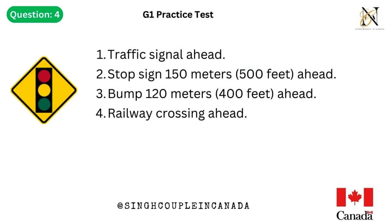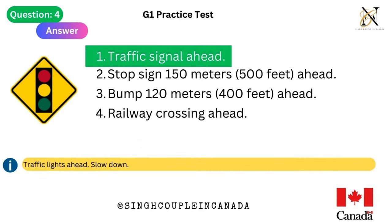Question 4. This traffic sign means: 1. Traffic signal ahead. 2. Stop sign 150 meters (500 feet) ahead. 3. Bump 120 meters (400 feet) ahead. 4. Railway crossing ahead. Answer is 1. Traffic signal ahead — traffic lights ahead, slow down.